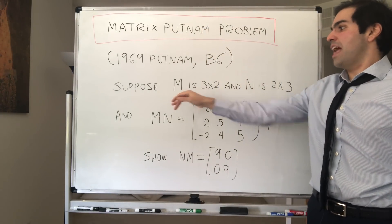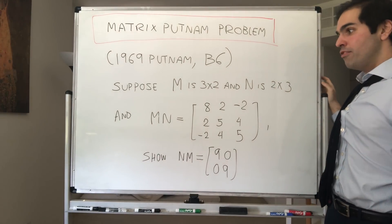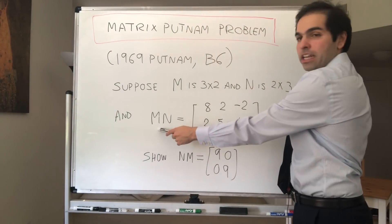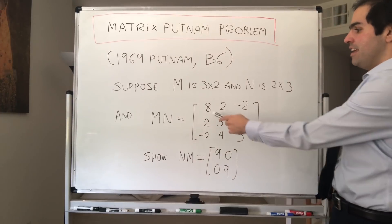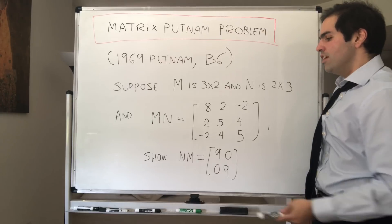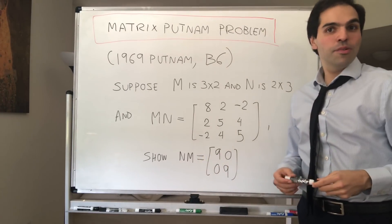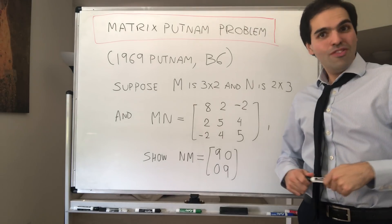In particular, suppose M is a 3 by 2 matrix and N is a 2 by 3 matrix such that MN is 8 2 -2, 2 5 4, -2 4 5. Show that NM is 9 0, 0 9.